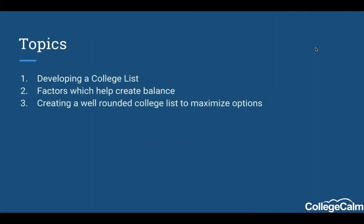We're going to talk about developing the college list. If your student is currently a junior, you're in this process right now. If your student is a freshman or sophomore, these are things to start thinking about as you look towards building a college list. We'll talk about factors that help create balance, why balance is important, and how to create a well-rounded list to maximize options. In the end, a student can only go to one school, but we want to make sure students have real choices.